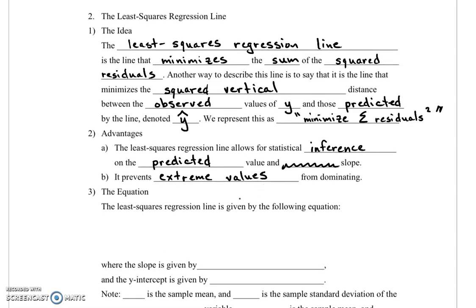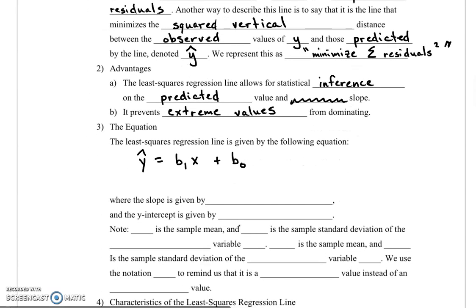What does the equation of the least squares regression line look like? It looks like y hat equals b1 x plus b0. The slope is given by b1, which equals the correlation coefficient times the standard deviation of the x variable divided by the standard deviation of the y variable.